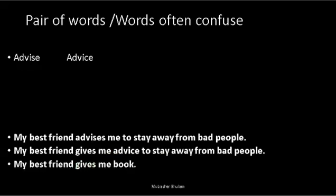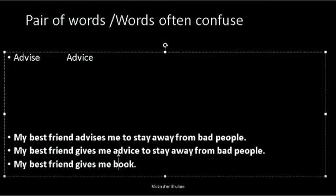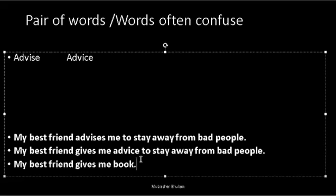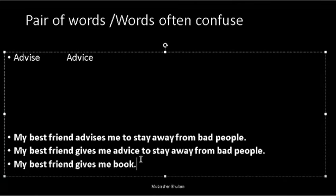To make it clearer, I have written a third sentence: 'My friend gives me book.' Now 'book' is a noun. If you replace 'book' with 'advice' (noun form), it works. But if you replace it with 'advise' (verb form), it won't work. This is called syntactic category — you try to replace a noun with a noun. If the word is a verb, it won't replace a noun, so that's how you can judge which is correct.